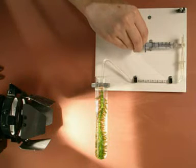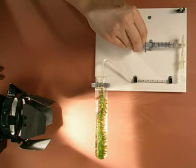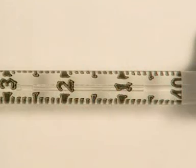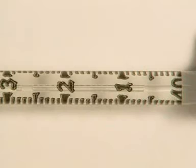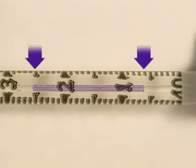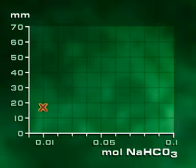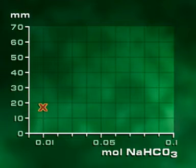After this time, the gas bubble is pulled into the capillary tube so that its length can be measured. It's 19 millimetres long. So, with a 0.01 molar hydrogen carbonate solution, the bubble is 19 millimetres.